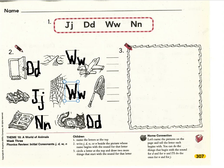Next picture. Jet. What sound do you hear at the beginning of the word jet? J-et. I hear the sound J. Which letter makes that sound? J. J says J. Nice work. Please write a capital J and a lowercase j on the handwriting line.